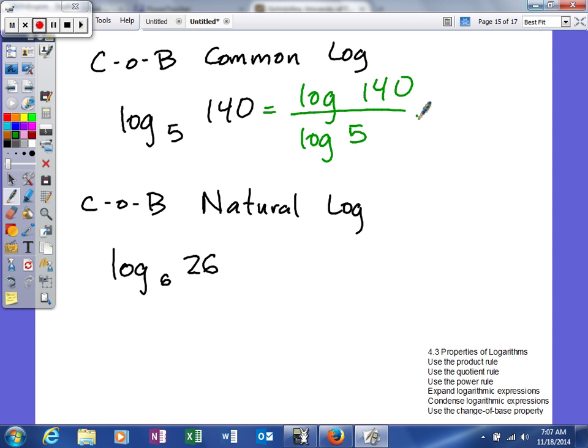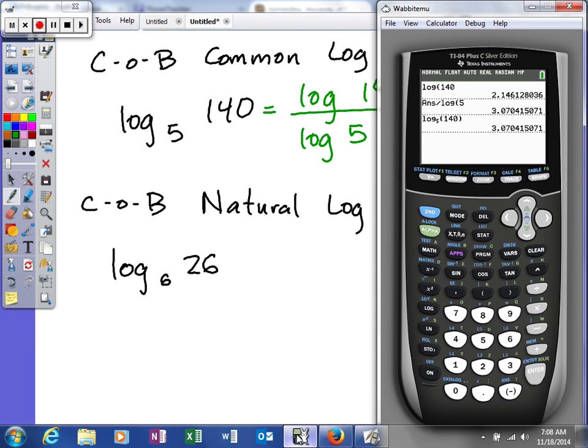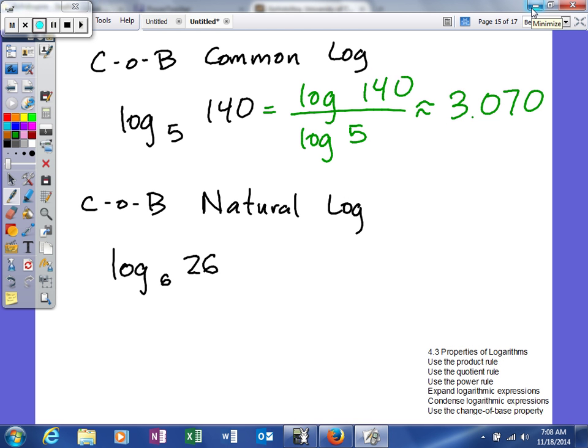So we'll say that this is roughly equal to 3.070. And of course, you would need to round it. I think it rounded. So we'll look at that 4 to determine what happens to that 0. If I'm rounding to three decimal places, you know, just keep it where it is.